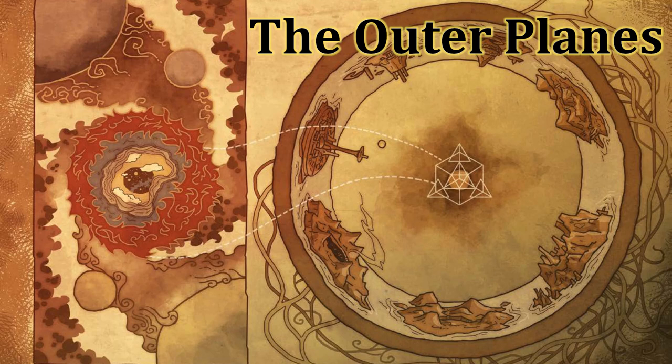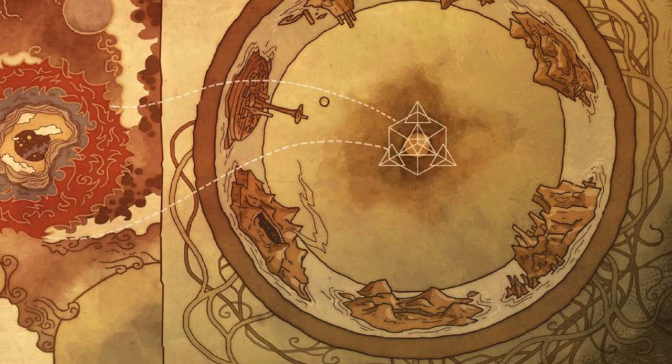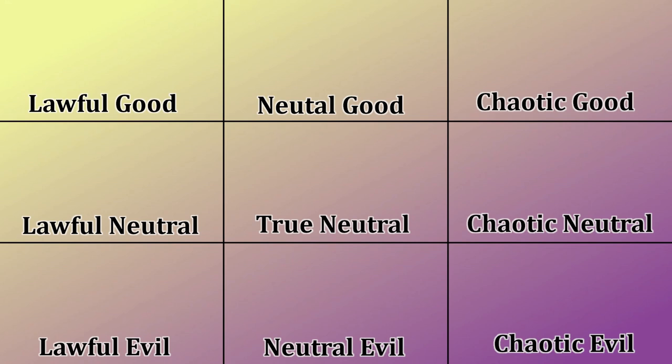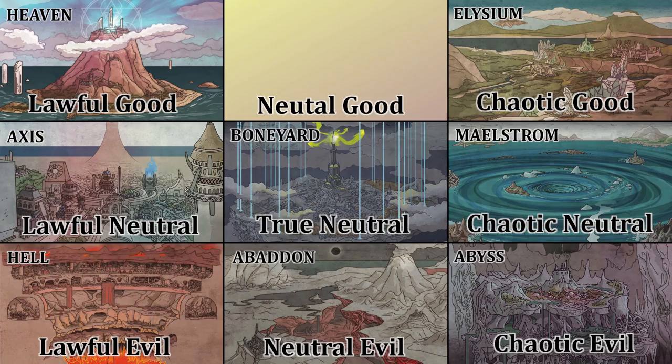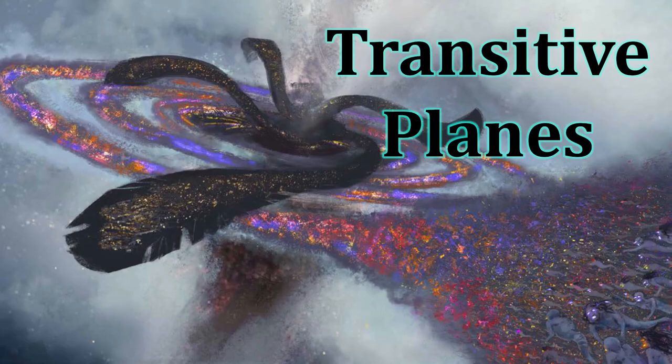The outer planes are composed of a material called quintessence, shaped and influenced by the morals and ethics of life and death. The nine alignments define the very nature of the outer planes and their denizens. These planes include the Abyss, Abaddon, Axis, the Boneyard, Elysium, Heaven, Hell, the Maelstrom, and Nirvana.